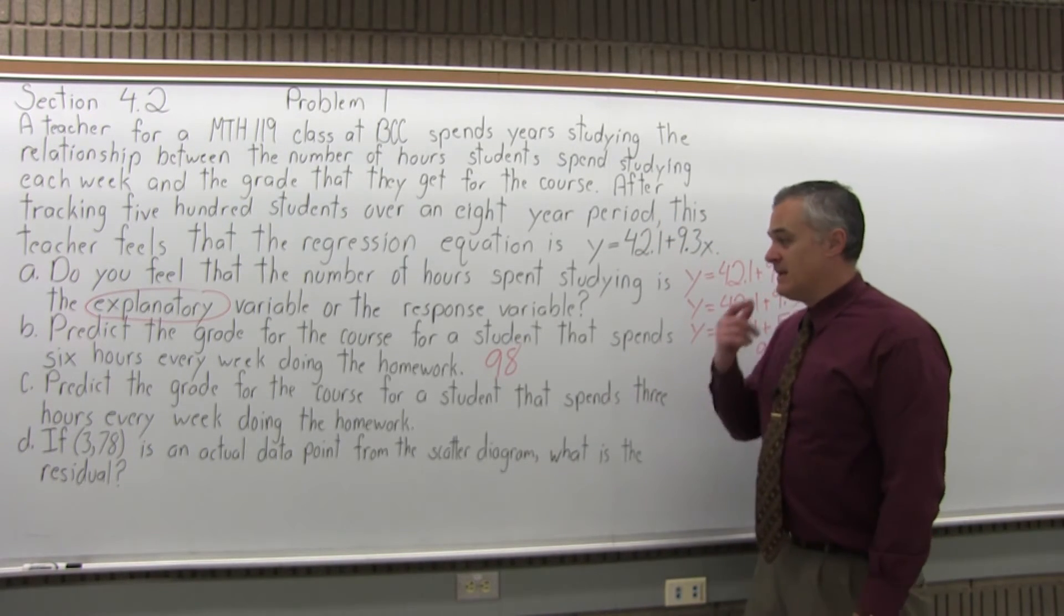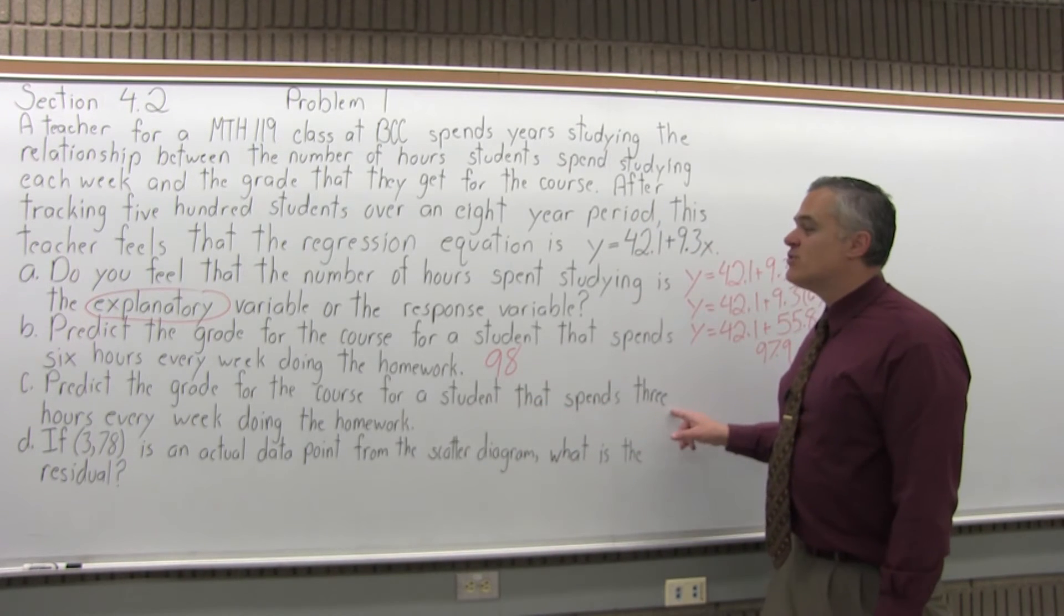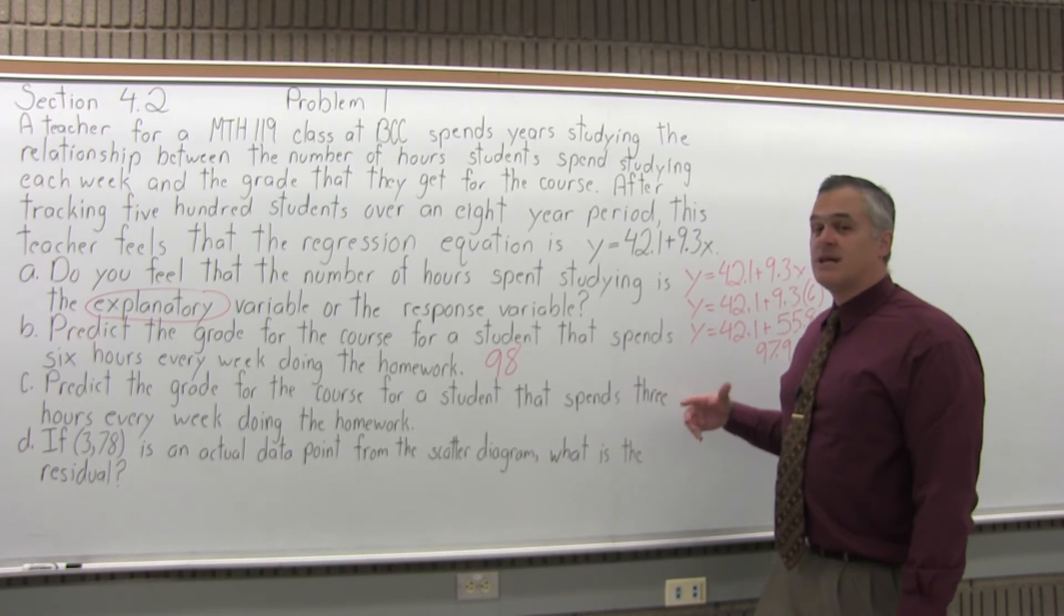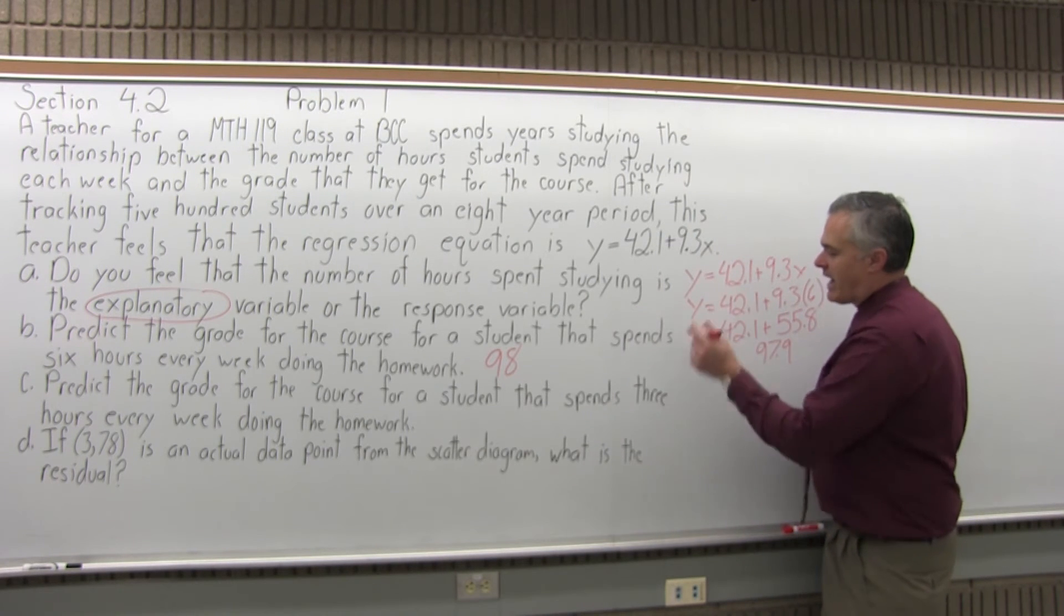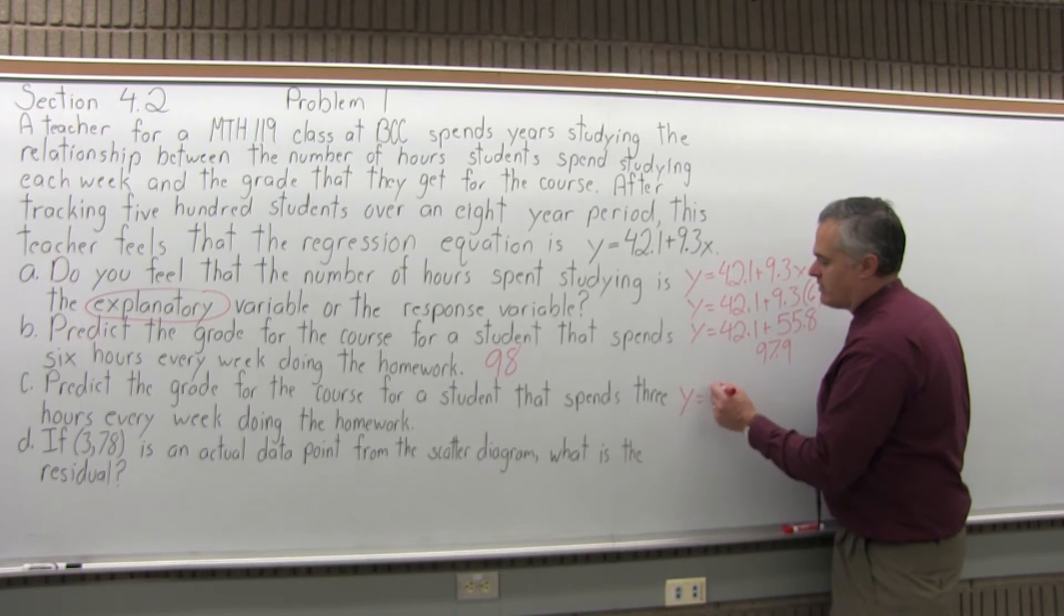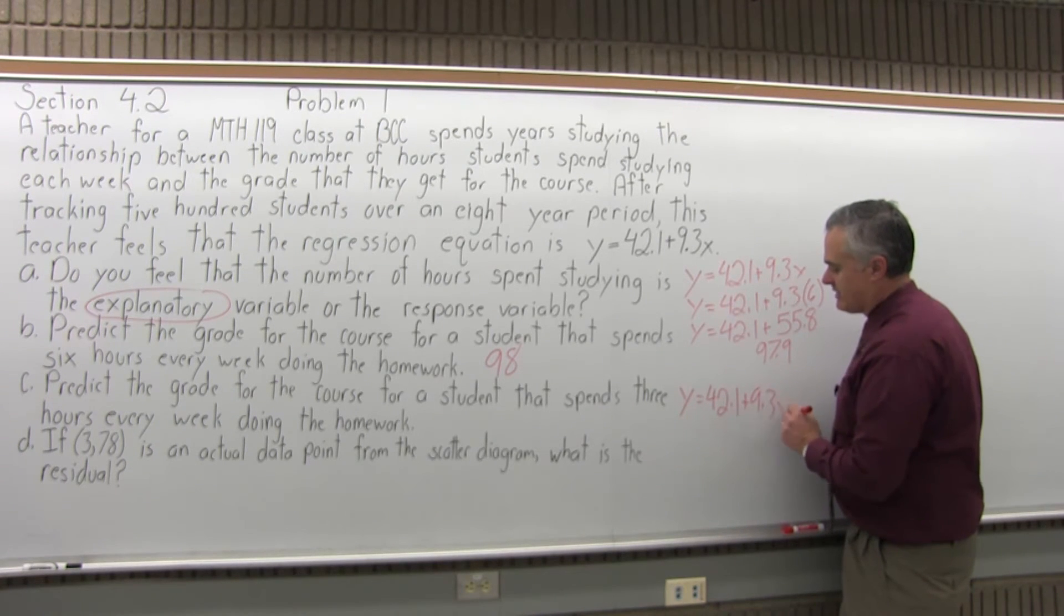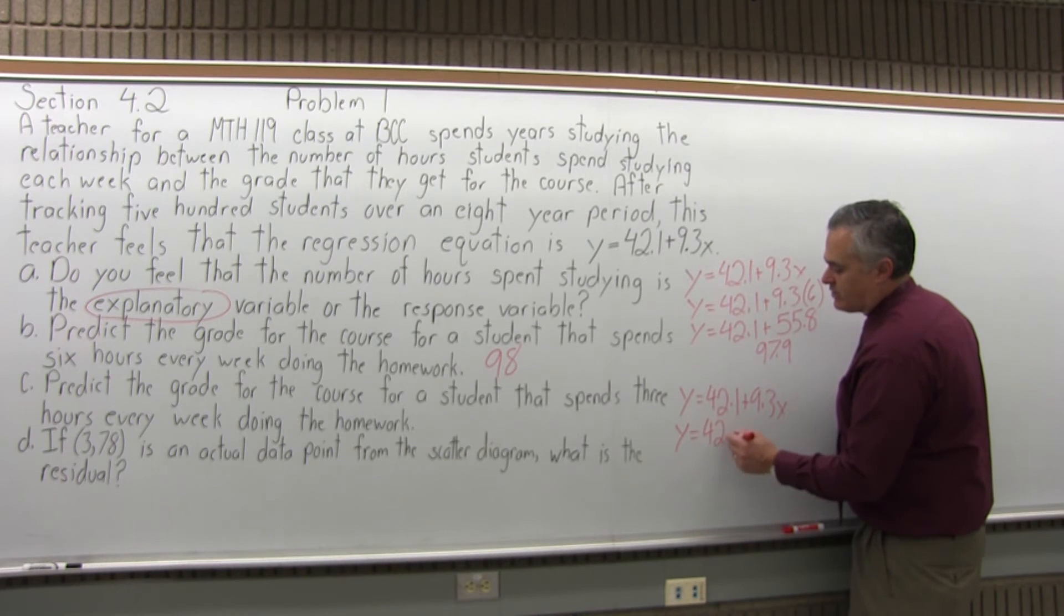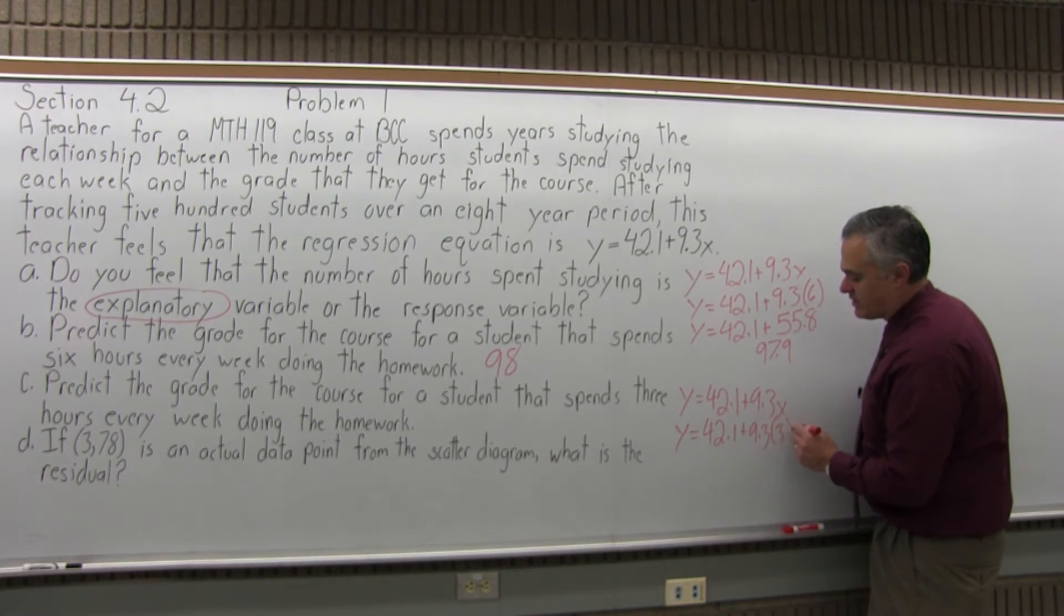Part C is predict the grade for the course for a student that spends three hours every week doing the homework. Same process, except you put in a three for X. So where I had started with the equation before, 42.1 plus 9.3 times X, the value of X is now going to be three. So 42.1 plus 9.3 times X becomes 9.3 times three.